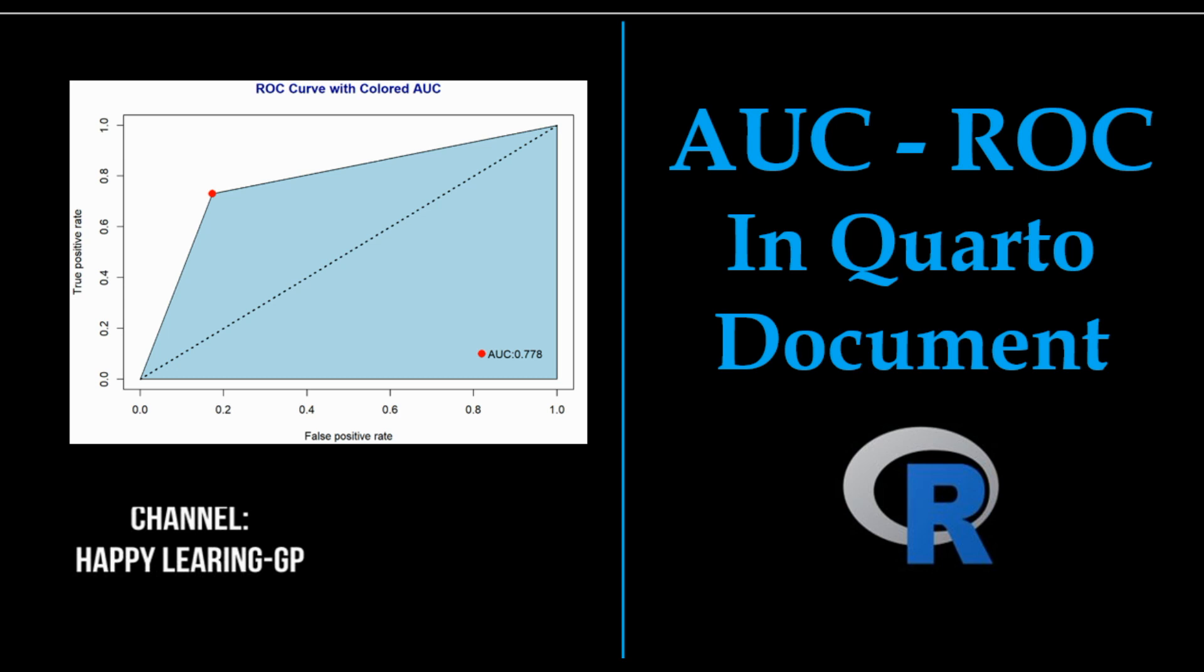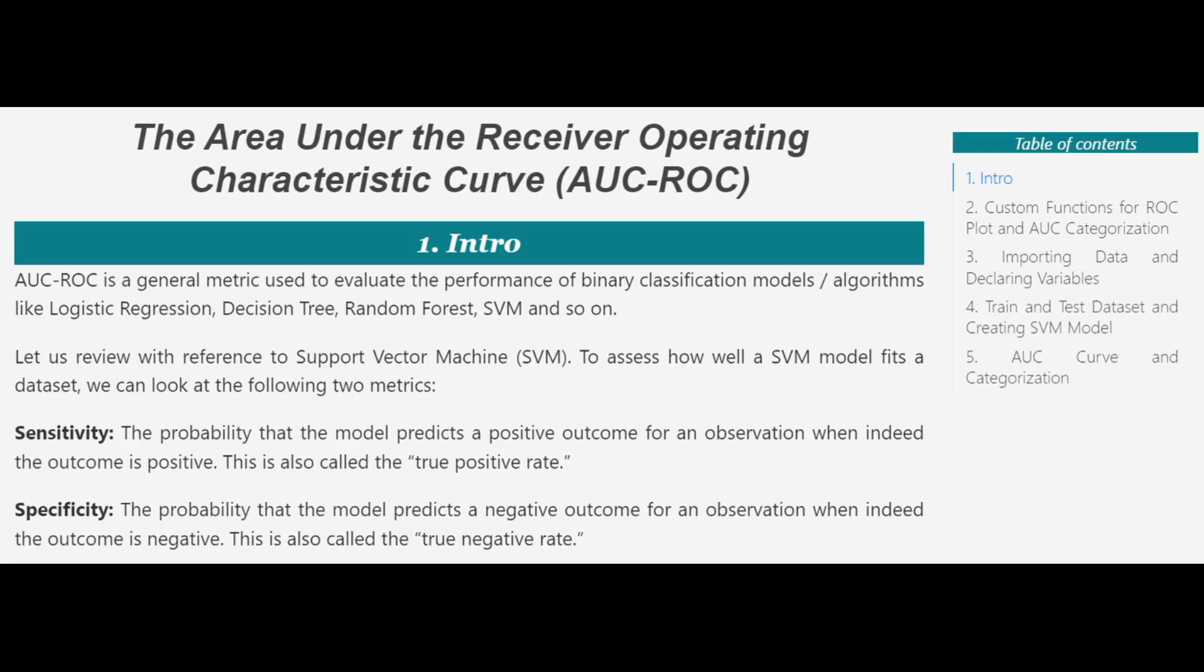Welcome to today's video where we'll dive into the area under the receiver operating characteristic curve, the AUC-ROC, which is a general metric used to evaluate the performance of binary classification models.